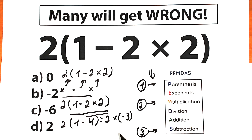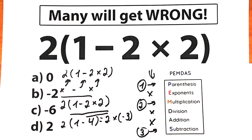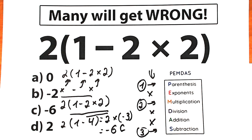Our last step is multiplication. We don't have any exponents or division, so we just handle this final part: 2 times minus 3, which is equal to minus 6. This is option C — the correct answer and the correct approach.